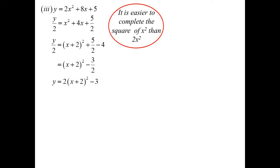y equals two x squared plus eight x plus five. So again, I'm going to do some completing the square here. But it's so much easier to complete the square on x squared than it is on two x squared. So I'll divide everything by two first. And then it becomes obvious.